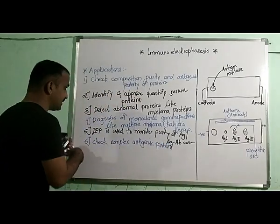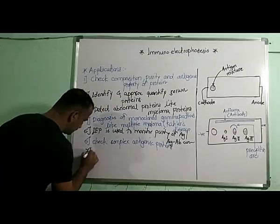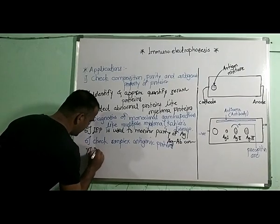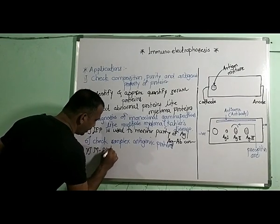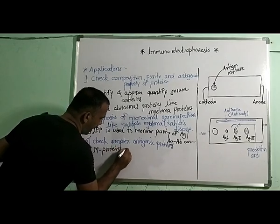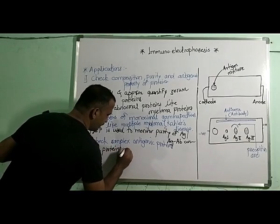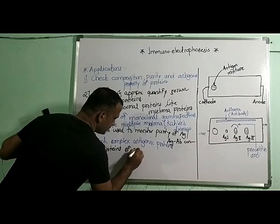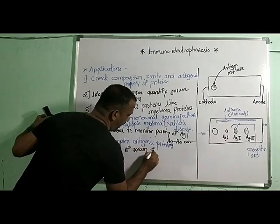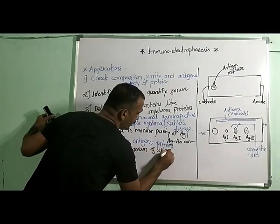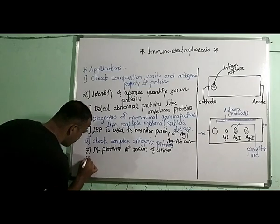Seventh point, to analyze the monoclonal young proteins in the serum and monoclonal young proteins of serum and urine. And the last point, it is used for diagnosis and evaluation of immune disorders.